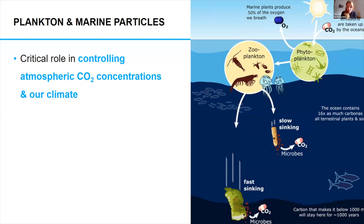So, plankton. Why are plankton important? Starting with phytoplankton — our little floating plants in the ocean. They take up CO2 from the atmosphere using sunlight, converting that into biomass. This process is really important in taking up carbon, converting CO2 into locked-away carbon. They take up about 25% of CO2 emissions annually and also produce about 50% of the oxygen on the planet. Then we have zooplankton — the animals that eat the phytoplankton, just like in a terrestrial system.